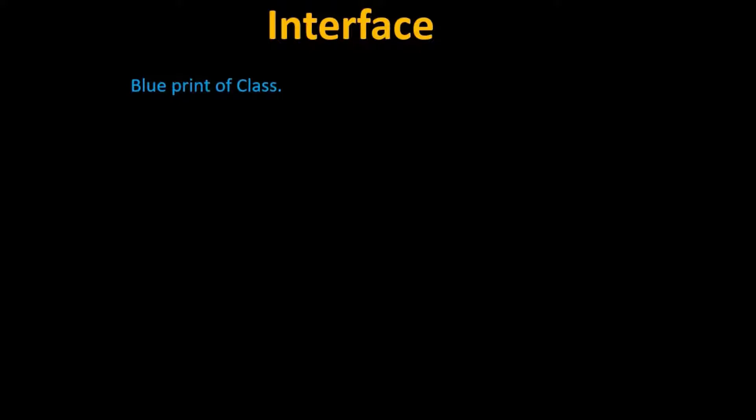Interface is a blueprint of a class. We can declare methods in an interface, and those methods must be implemented by a class or classes. When we look at an interface and its methods, we get the idea of which methods will be in the class or classes that implement the interface.